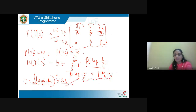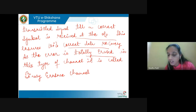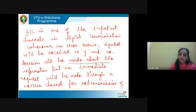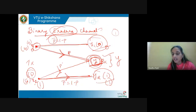So for the binary erasure channel, the channel capacity is found using the same equation. This channel guarantees 100% correct data recovery because the error is completely erased — whenever erasure symbol y is received, a retransmission request is made until the proper symbol 0 or 1 is received. Hence it is called the binary erasure channel.